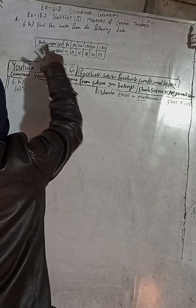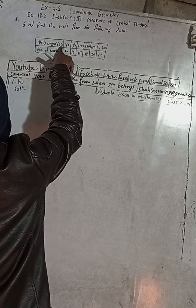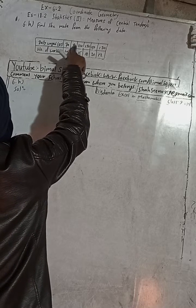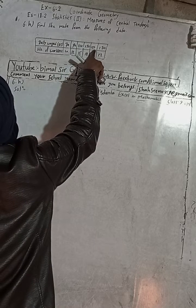This is the data given in this table. Daily wages in rupees: Rs 70, Rs 70, Rs 90, Rs 110, Rs 130, Rs 150.